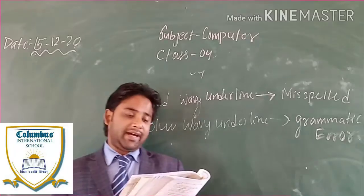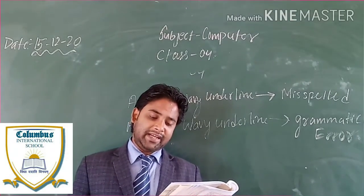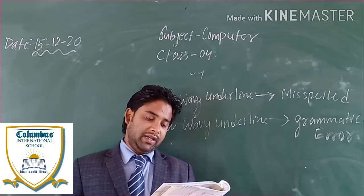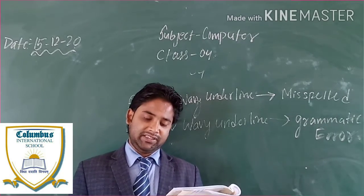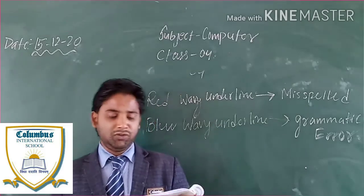Second, the spelling task pane appears on the right side of the document window. Third, the incorrect word will be highlighted in grey and a list of suggestions will be displayed.